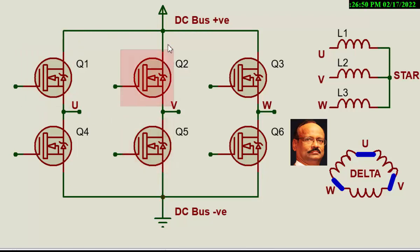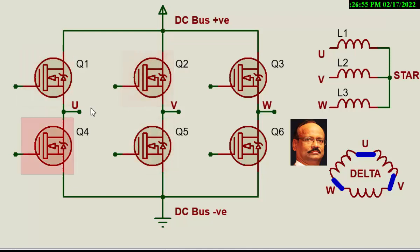In the negative half cycle, it is just the opposite. These two switches are switched off and these two are switched on. The current flows this way — at that time it was going U to V, now it is going V to U — and then to the negative terminal. And that is how the cycle is complete.